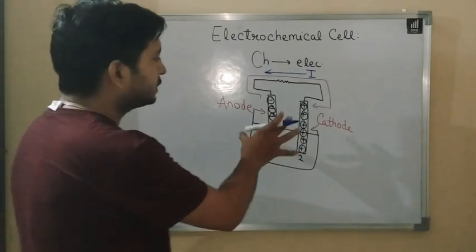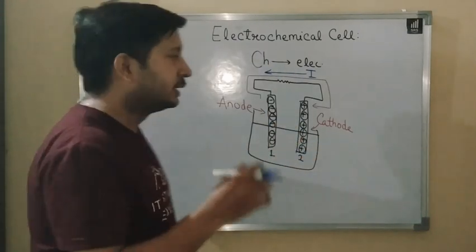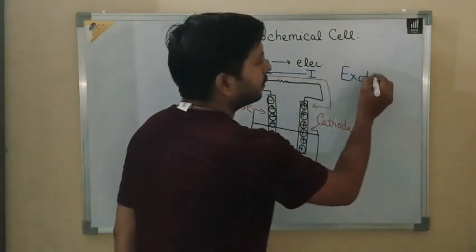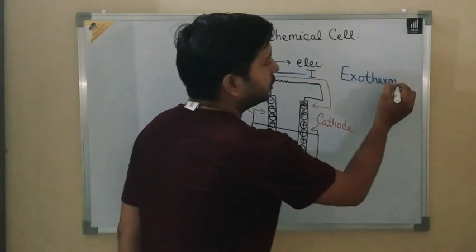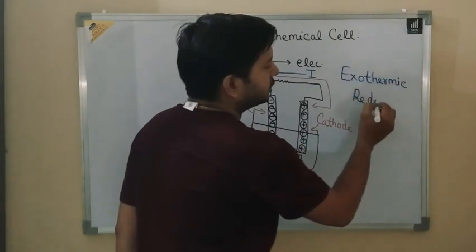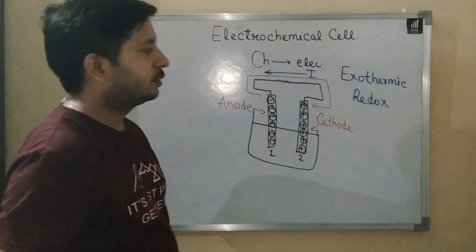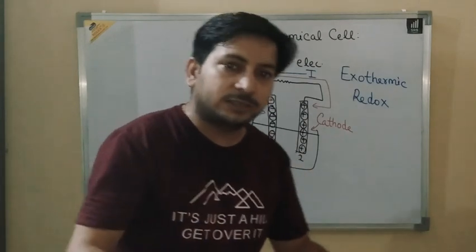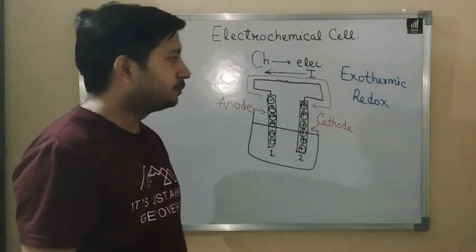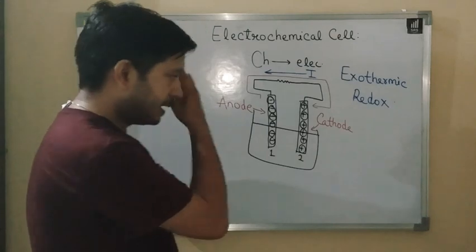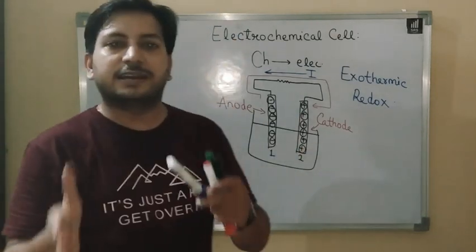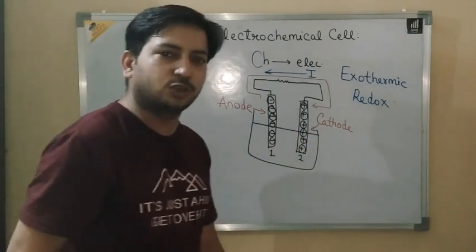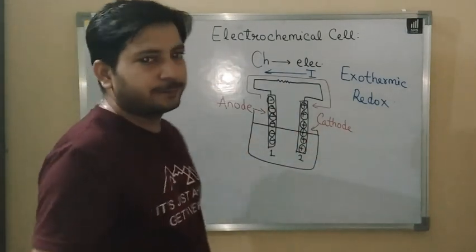The electrochemical cell follows a reaction which is exothermic and redox in nature. Exothermic means it emits heat energy. Redox means there is reduction and oxidation — oxidation occurs on the anode side and reduction occurs on the cathode side.